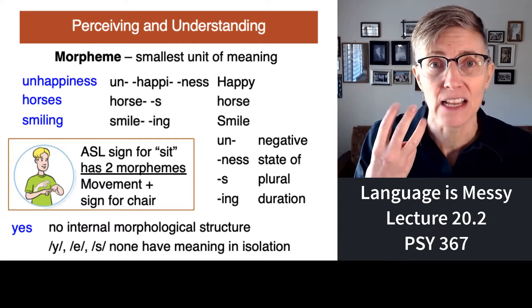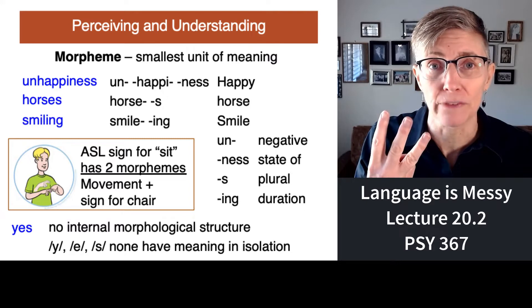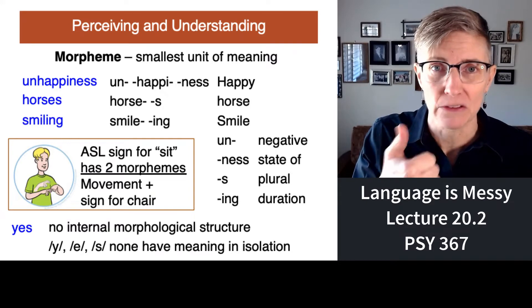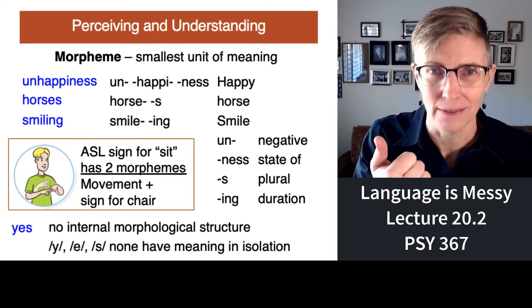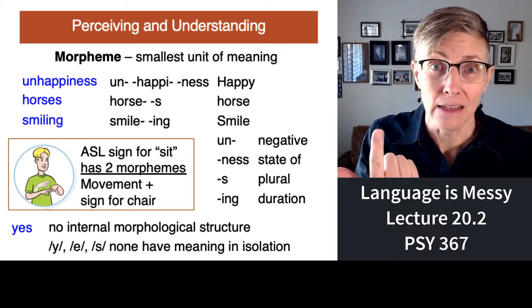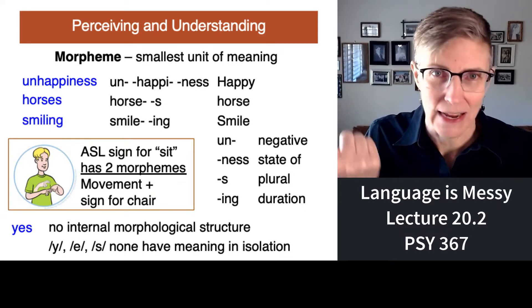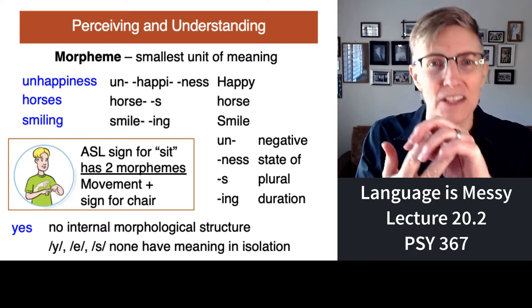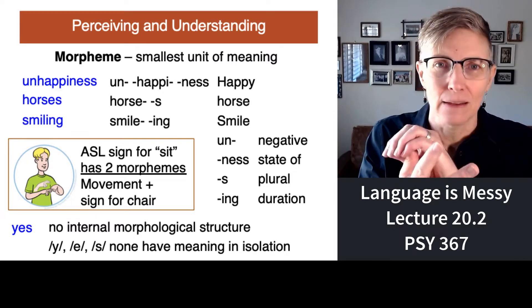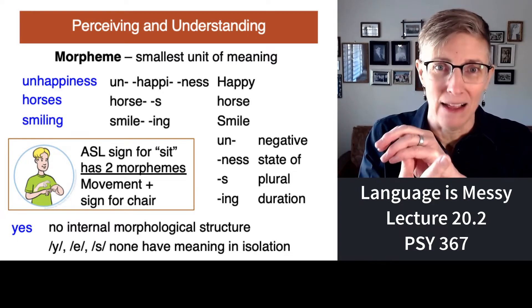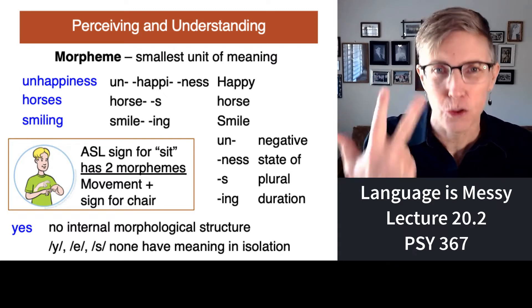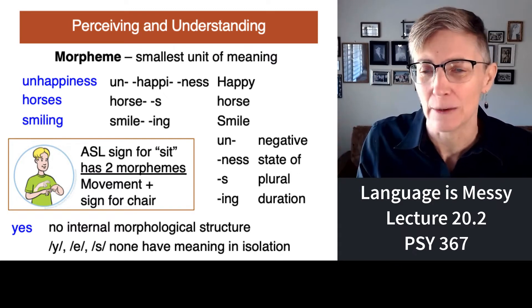'Unhappiness' has three morphemes: 'un,' which means not; 'happy,' which means happy; and 'ness,' which means being in the state of — except you're not. So 'unhappiness' is three units of meaning.